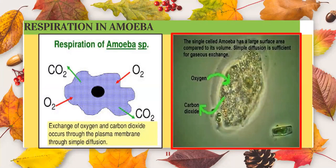In organisms such as amoeba, euglena, and paramecium, oxygen is taken directly from the surroundings. Oxygen and carbon dioxide diffuse in and out through the outer cell membrane or the body surface.